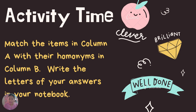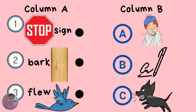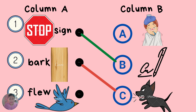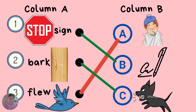Let's try this. Match the items in column A with their homonyms in column B. Write the letters of your answers in your notes. What do you think are the correct answers? Let's check. Number 1 — the correct answer is letter B. Sign and sign are homonyms. How about number 2? The correct answer is letter C. Bark and bark are homonyms. And number 3 — the correct answer is letter A. Flu and flu are homonyms. Very good.